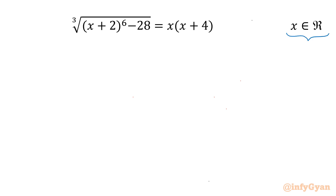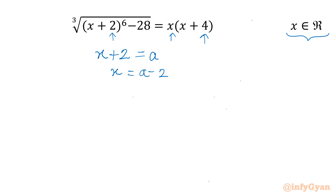Let's get started with our straightforward substitution. As we can see 2 is here, 0 and 4. So I will take the average mean value. I will be writing x plus 2 equal to a. So from here x is equal to a minus 2, and x plus 4 will be a plus 2.